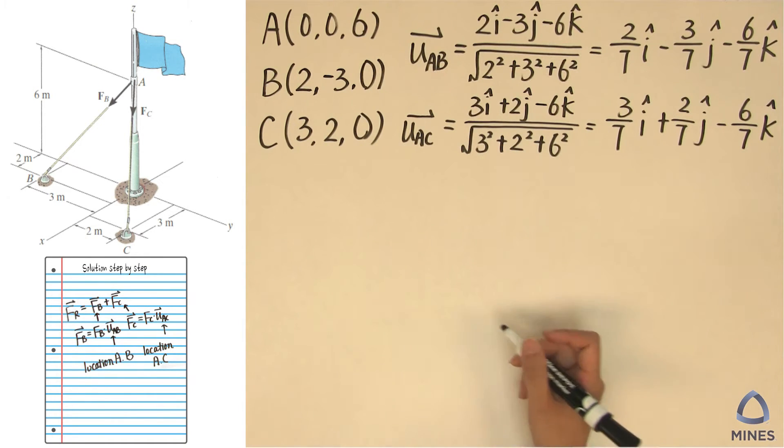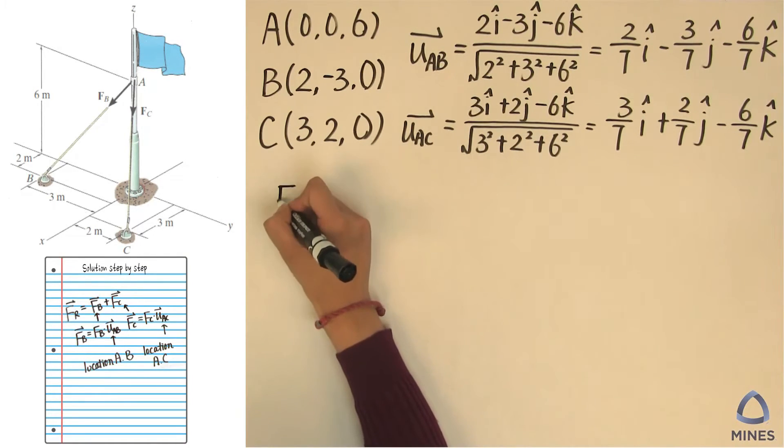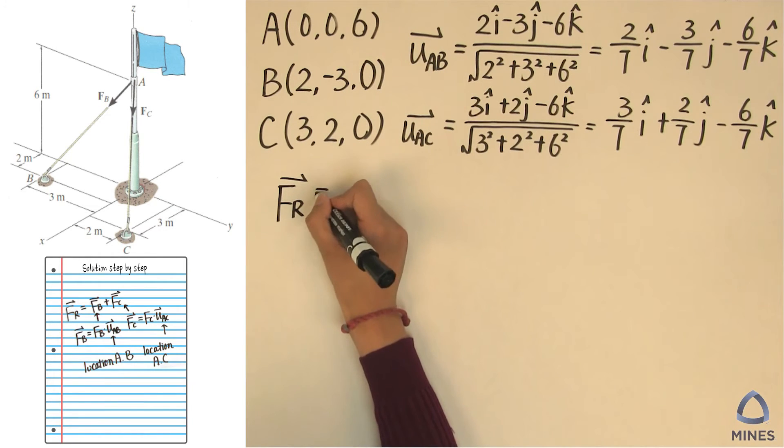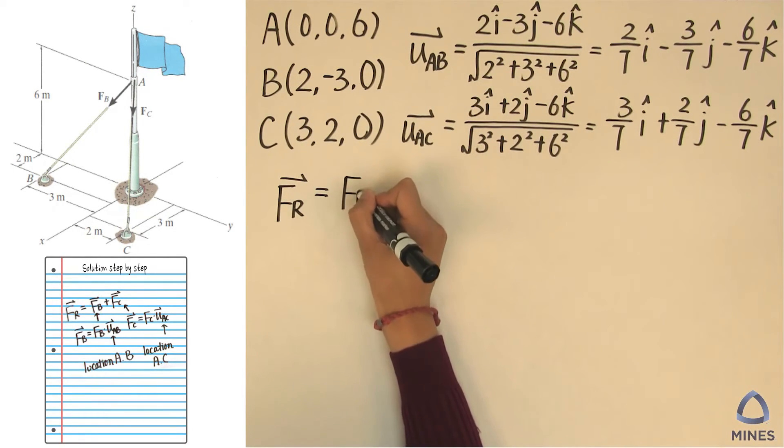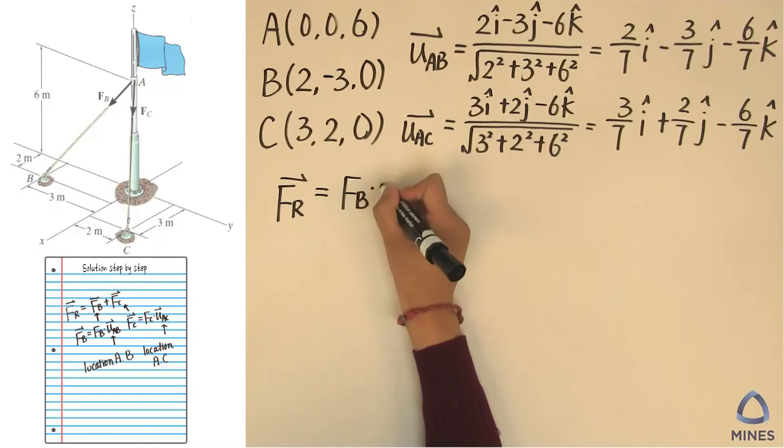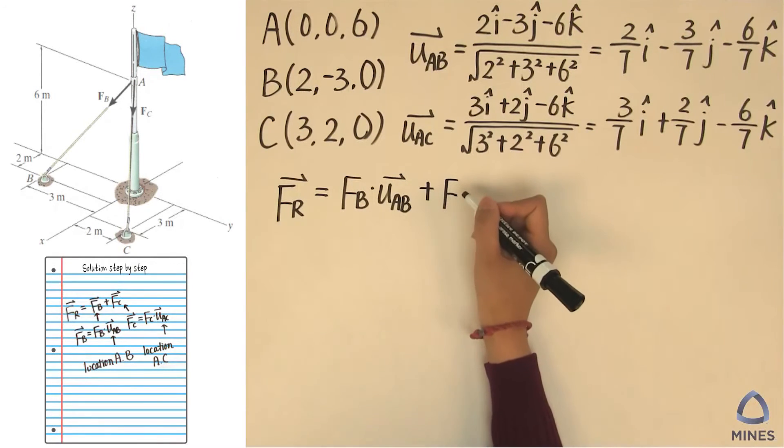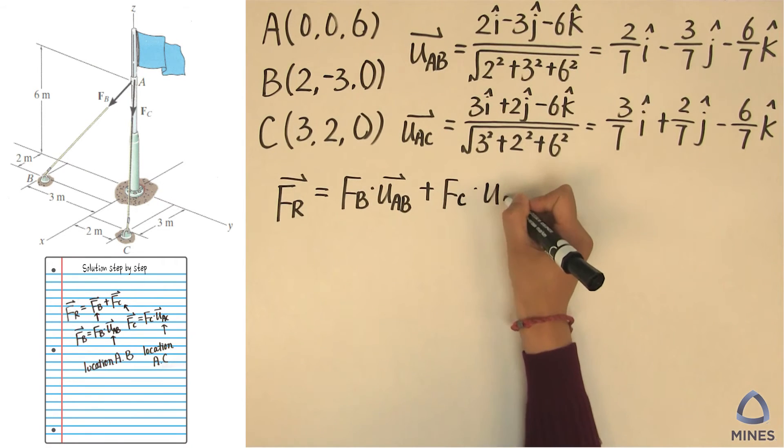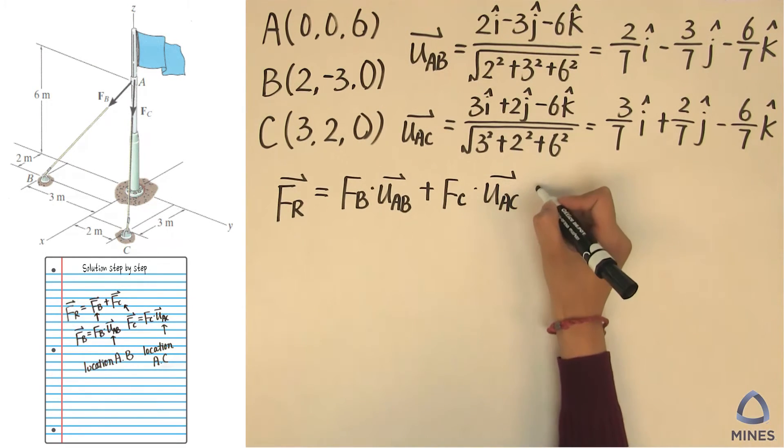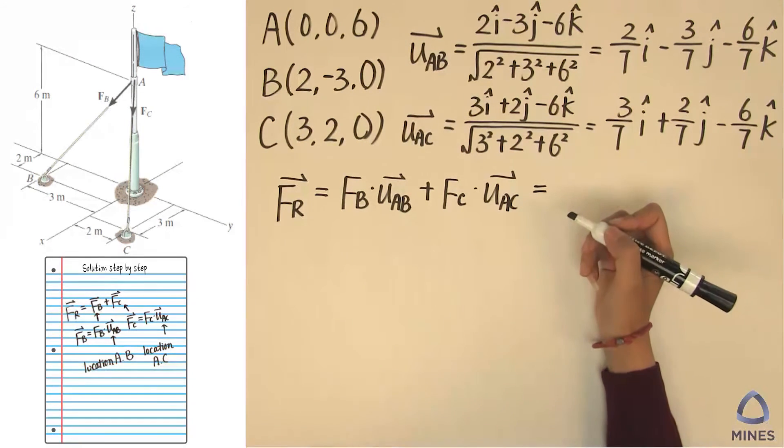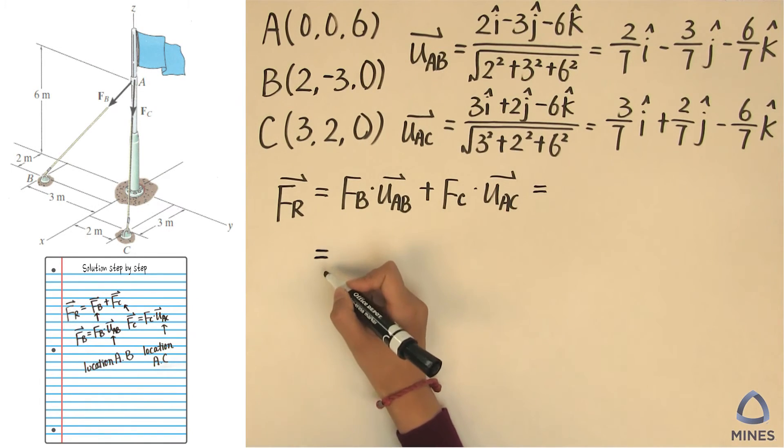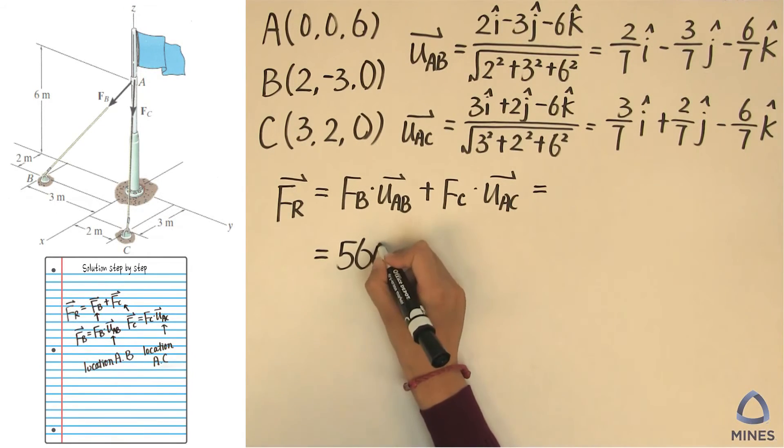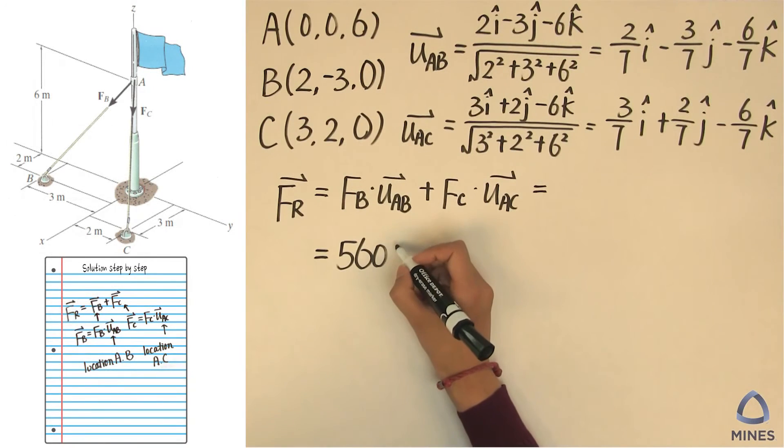So when everything is ready, we can calculate the total resultant force. That will be the magnitude of force B multiplied by the unit vector in the force action line A to B. So in our case, it will be 560 for the magnitude FB.